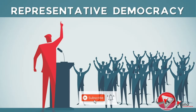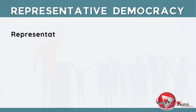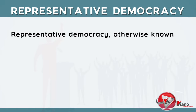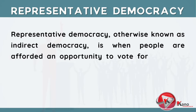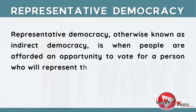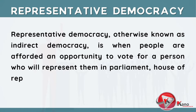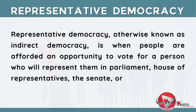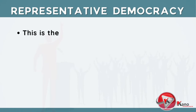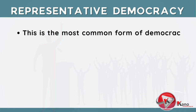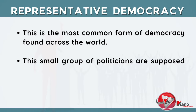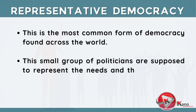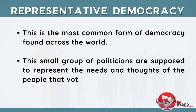The next type of democracy is representative democracy, otherwise known as indirect democracy. This is when people are afforded an opportunity to vote for a person who will represent them in parliament, or in the house of representatives, or in the senate, or even in the municipal council. This is the most common form of democracy found across the world. This small group of politicians are supposed to represent the needs and thoughts of the people that voted them in.